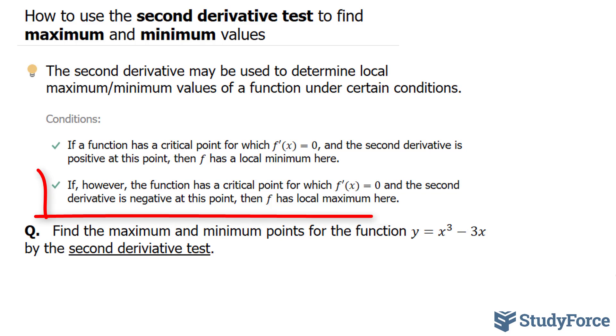Similarly, if the function has a critical point for which f prime at x is equal to zero, its derivative, and the second derivative is negative, then there's a local maximum.